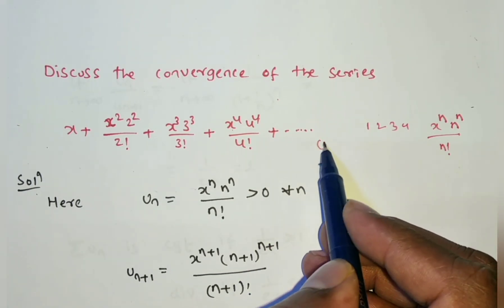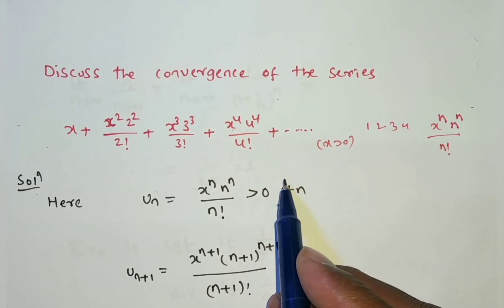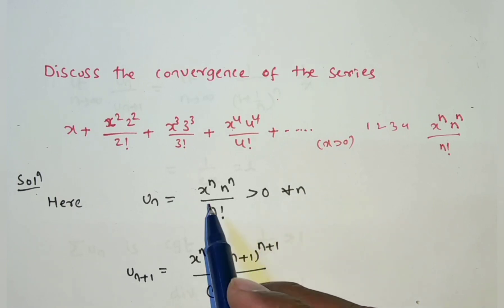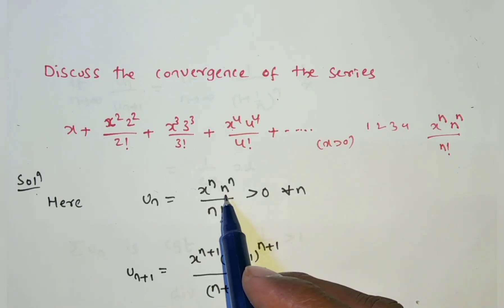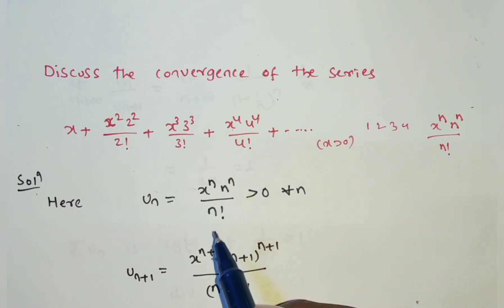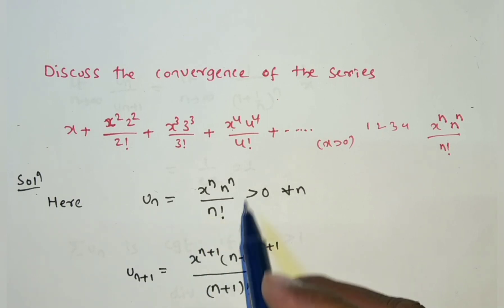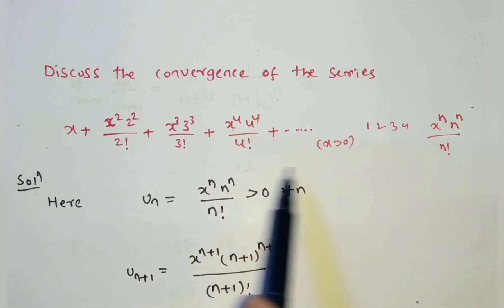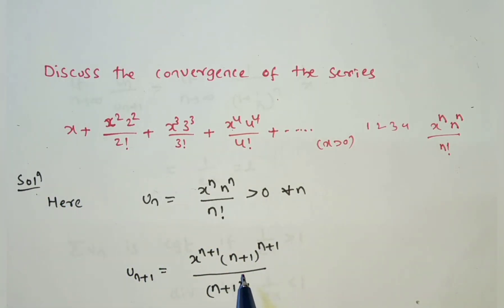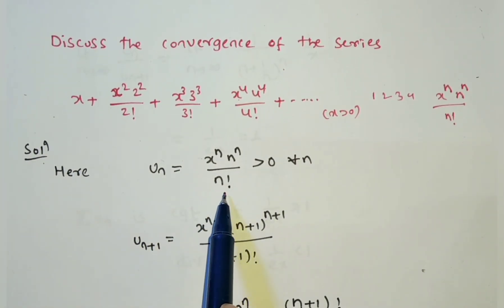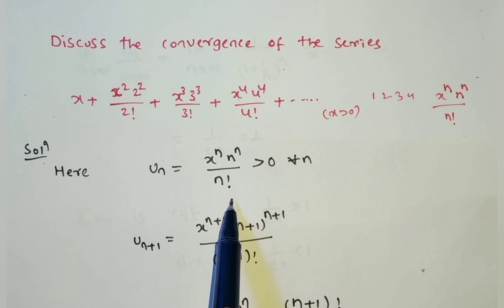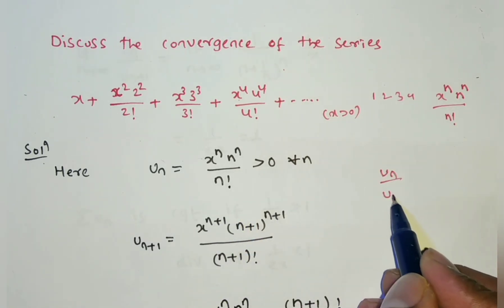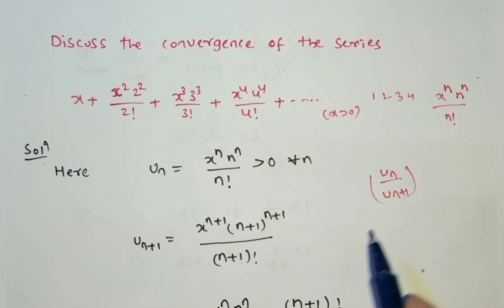Since in the given series x is greater than 0 and n is a natural number greater than 0, the numerator and denominator are both greater than 0, so un > 0. The series is a series of positive terms. Now it contains factorial, so if we have factorial, which method do we apply? The ratio test. In the ratio test, we need to find un/un+1.